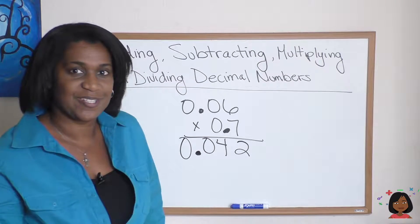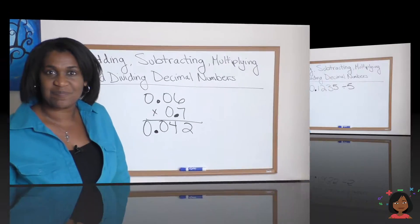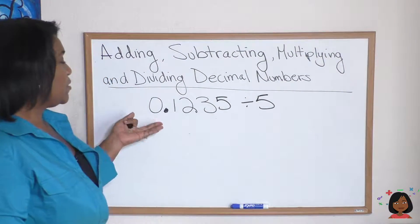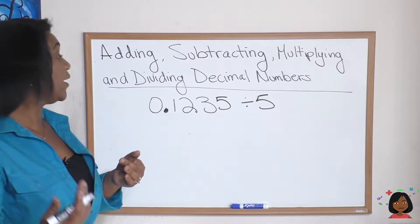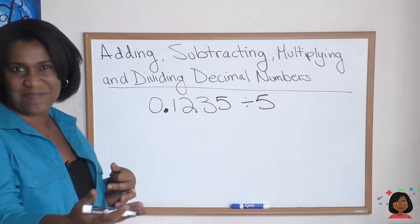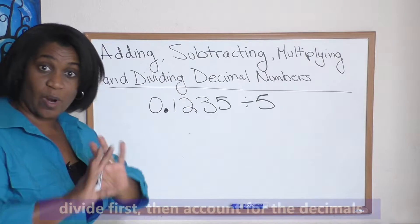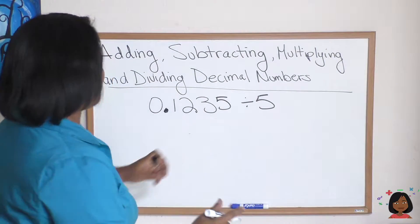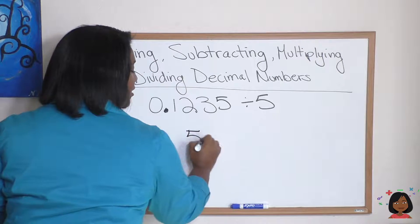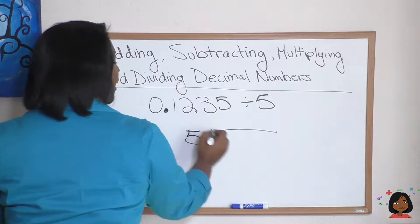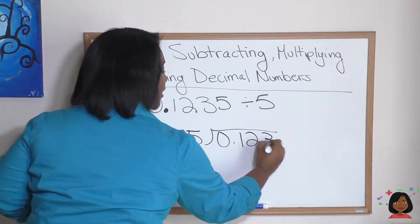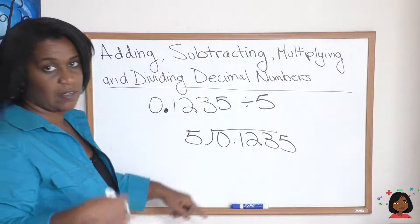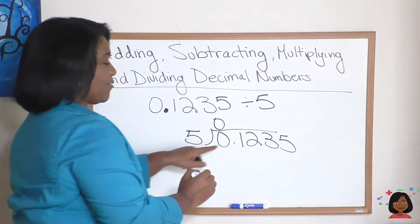Let's try division. Take a look at our division problem. So we have 0.1235 divided by 5. What we're going to do is do our division like normal and then at the end account for those decimals. Here we go: 5 is our divisor, it goes on the outside, and 0.1235. Let's do it: 5 goes into 0, 0 times. 5 goes into 1, 0 times.